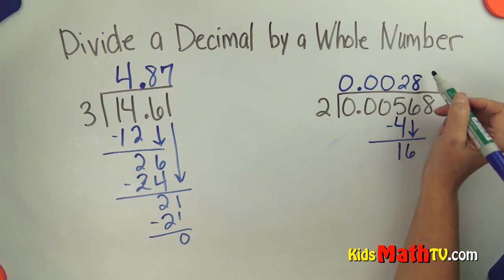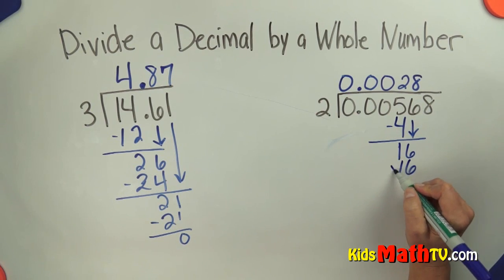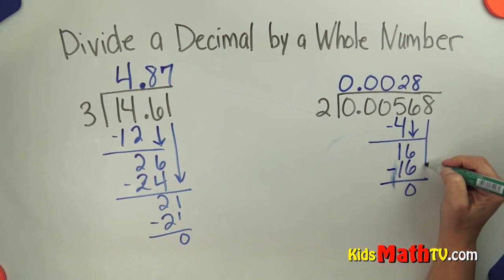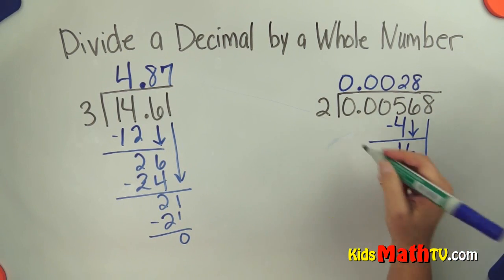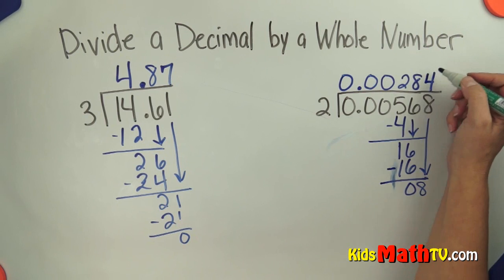Subtract, that's a zero. Bring down an 8. How many twos in 8? 4. 4 times 2 is 8, subtract and we get 0.